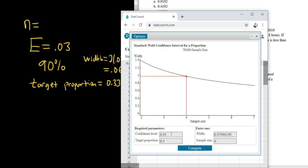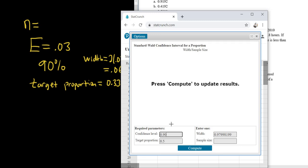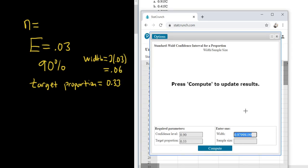And then here, what you do is you change the level to 0.90. And then the target proportion was 0.33. And then your Width, we said, was 0.06. Just make sure everything looks good before you hit Compute. So the level is 0.90. Target proportion is 0.33. Width is 0.06. Click Compute.